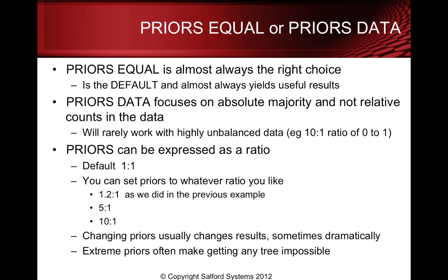So which should we use: priors equal or priors data, or something else? Priors equal is almost always the right choice. We do not recommend that you start your experimentation with something else. Go with the default — see where it takes you. The default almost always yields useful results. Priors data focuses on absolute majority and not relative counts in the data. Priors data will rarely work with highly unbalanced data. If you've got ratios like 10 to 1 of zeros to ones, so that the rare class is a relatively small fraction, it's very unlikely that priors data will give you useful results.